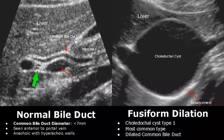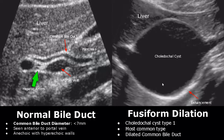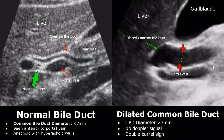Choledochal cysts are congenital dilatations of bile ducts. The most common type is fusiform dilation — it is a type 1 choledochal cyst. The common bile duct is dilated and it is open from both sides; one end leads to the pancreas. Here we have an image of a dilated common bile duct — the diameter will exceed 7 millimeters and there will be no blood flow seen on Doppler.